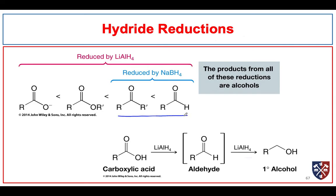So what we see then is we have two reducing agents: one is mild and will reduce only aldehydes and ketones, and the other one — lithium aluminum hydride — is quite a strong reducing reagent and will reduce not only aldehydes and ketones, but also carboxylic acids and carboxylic acid derivatives.